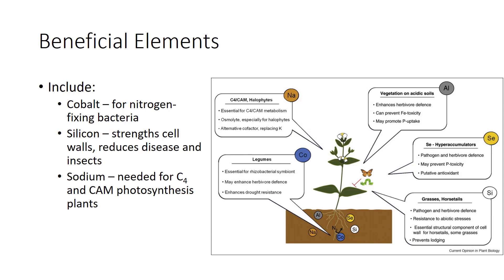A number of other elements contribute to the nutrition of certain plants, although they may not be currently considered universal essential elements. Cobalt is considered to be an essential element by some and is needed for nitrogen fixation; in a sense, it is an essential element for nitrogen-fixing bacteria, making cobalt an important element for legumes and other nitrogen-fixing plants. Silicon is needed by some grasses and horsetail, especially wetland grass species. Adequate silicon is needed for best yields in rice and sugarcane. Research also shows that high silicon content strengthens cell walls and reduces disease infections and insect attack. Sodium appears to be required for many plants native to sodium-rich soils, including species that have special types of photosynthesis adapted to hot, sunny climates, such as cacti, succulents, and many warm-season grasses such as corn and sugarcane.